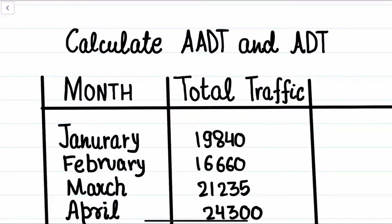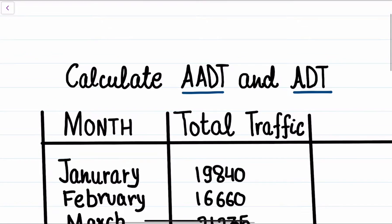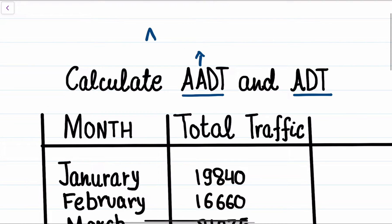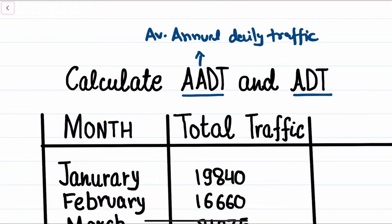Hello everyone, welcome to Stable Engineering and Stuff. In today's video we are going to solve a numerical on how to find the AADT value and ADT value. In previous videos we discussed what AADT is — AADT, as we know, is the Average Annual Daily Traffic, a parameter used to represent traffic volume. ADT is the Average Daily Traffic, again a parameter for representing traffic volume.